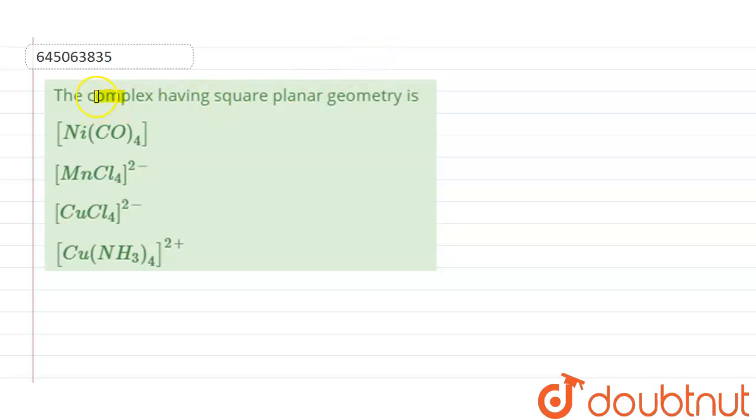Hello students, the question is the complex having square planar geometry is? So let's discuss, first one is NiCO4.